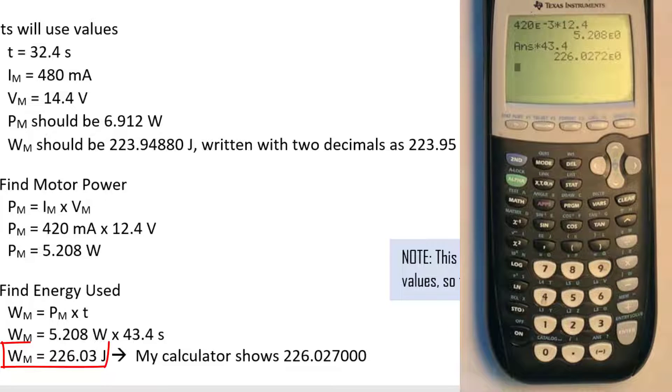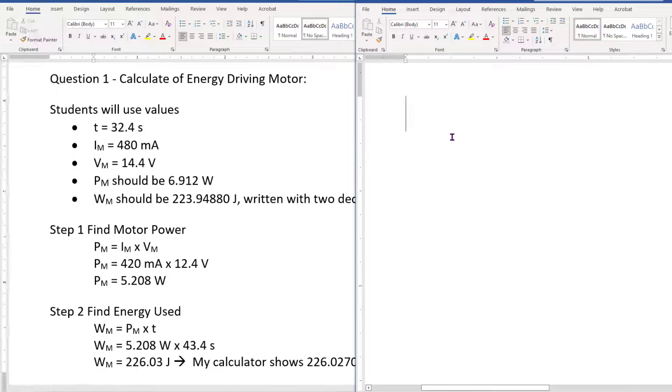So I'm just going to say times 43.4 equals. Now this guy I need to make that with two decimal places. So as opposed to writing .027000, I'm going to write .03 because in my lecture classes I want students to use two decimal places. Okay, so how do you document this?